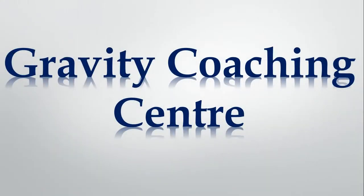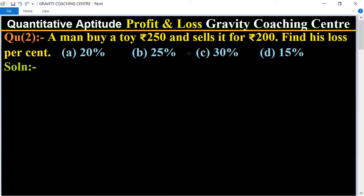Welcome to our channel Gravity Coaching Center, Quantitative Aptitude, chapter Profit and Loss. Question number two: A man buys a toy for rupees 250 and sells it for rupees 200. Find his loss percent. In this question, the cost price of the toy is 250 and selling price is 200.